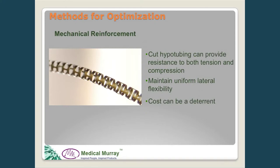One way to get around that is cut hypotubing. This method uses virtually an endless number of patterns that can be designed and cut out of tubing, allowing a shaft design that resists both compression and tension while maintaining uniform lateral flexibility. The downside with this design is cost, especially for a longer catheter that may require this component over its full length.